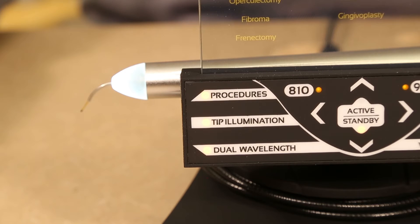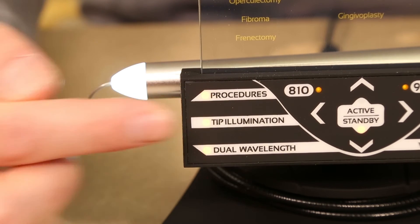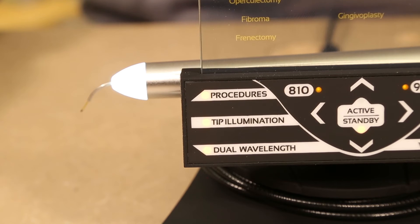To adjust tip illumination, simply press the tip illumination button which toggles between low, high, and disabled.